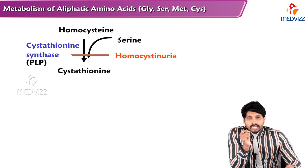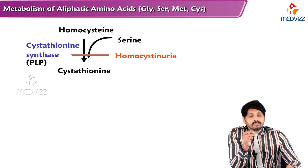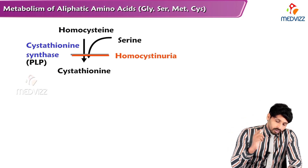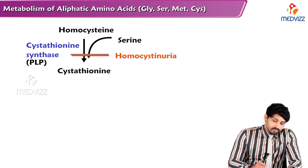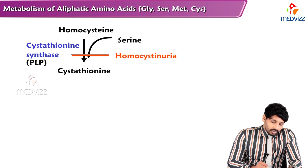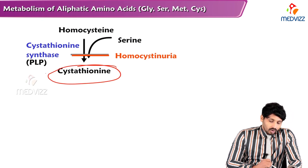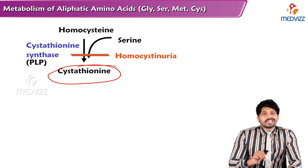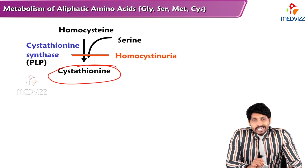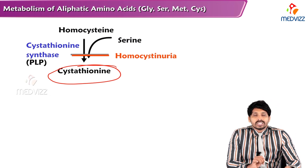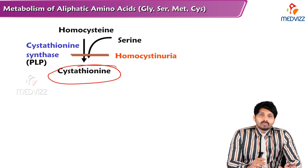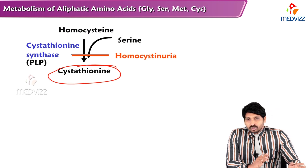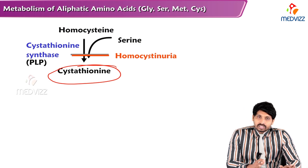Cystathionine synthase is a highly vitamin B6-dependent enzyme — that is, PLP-dependent. When serine is added to homocysteine, it forms Cystathionine. If there is a blockage in this reaction due to an enzyme defect in Cystathionine synthase, there is accumulation of homocysteine in both the blood and urine.